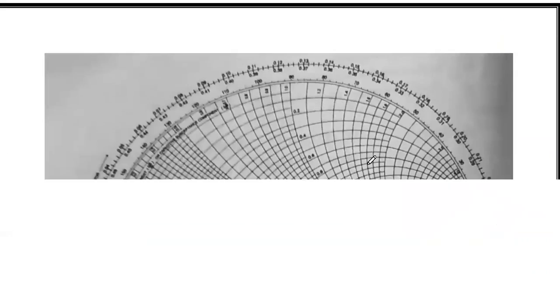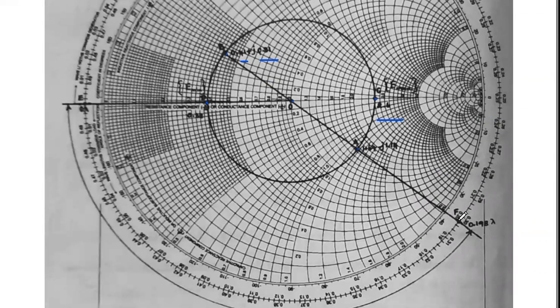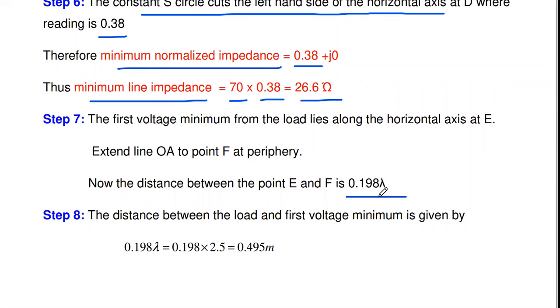On the correct Smith chart graph, the scale reads 0.19 to 0.2, confirming the answer is 0.198λ. Since wavelength λ = 2.5 m, the physical distance = 0.198 × 2.5 = 0.495 meters. So the distance between the load and the first voltage minimum is 0.495 m.